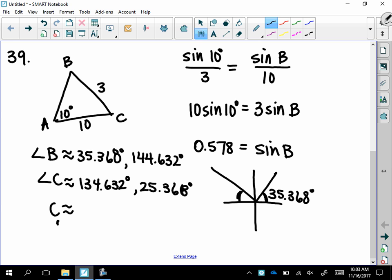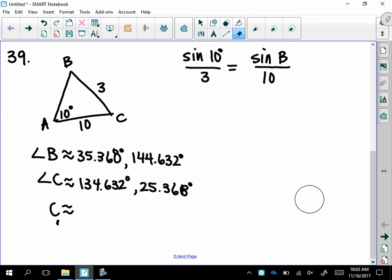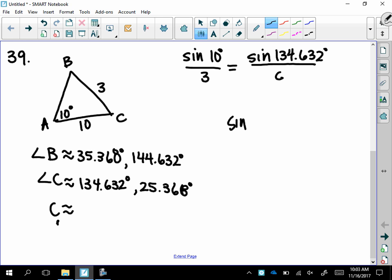Since there's two possible angles for C, then there's going to be two possible side values. And you're going to take each of those angles for C and do a law of sines problem with each of them. So we'll do the sine of 134.632 over side C, and then another law of sines, sine of 25.368 over C, and solve each of those to get side C.